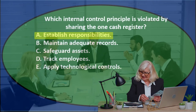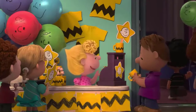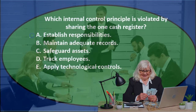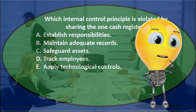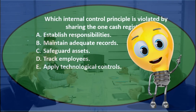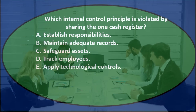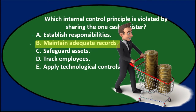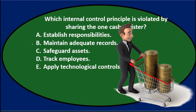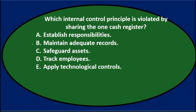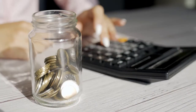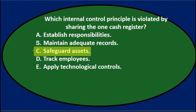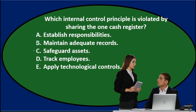Which internal control principle is violated by sharing one cash register? A, establishing responsibility, could be it — we have two people on one register and don't know who's responsible if there's a problem. B, maintain adequate records — the register should still record sales, so probably not that. C, safeguard assets — there's two people involved, maybe less safeguarding, so I'll keep it for now.